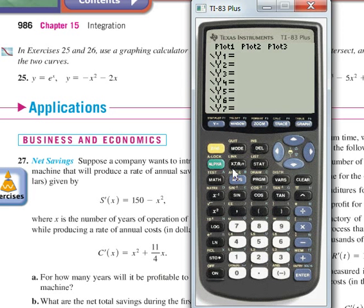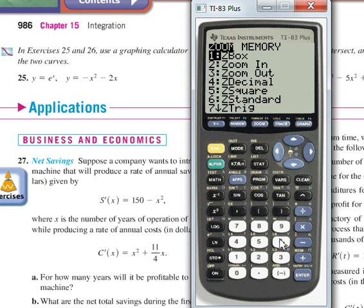Y equals, so let's put in e to the x, and negative x squared minus 2x. I'm just going to go zoom 6, then I just hit number 6 for standard.